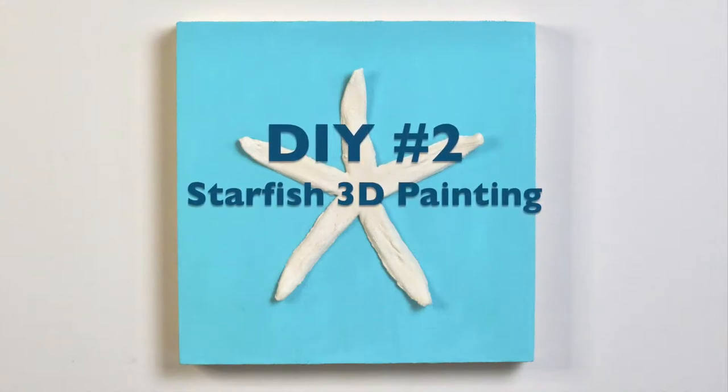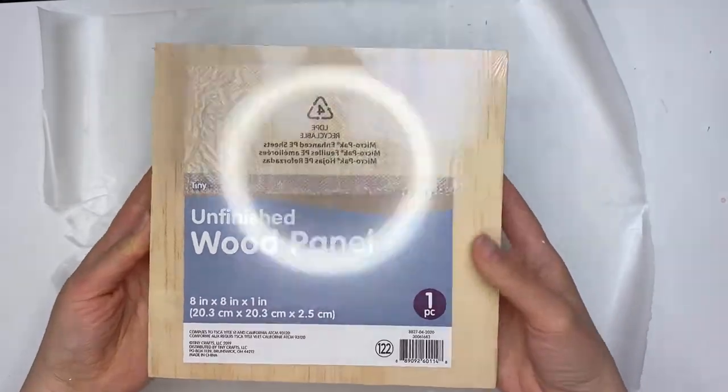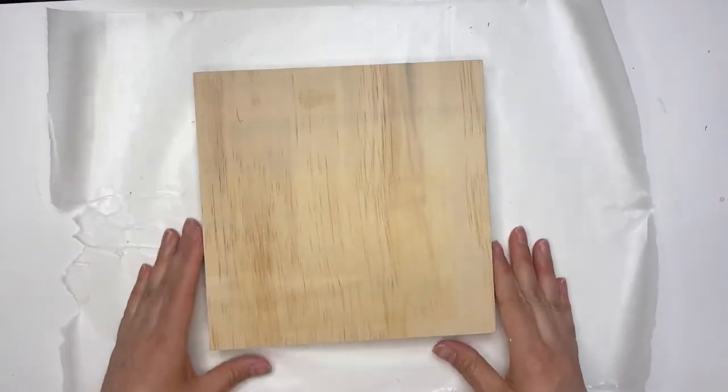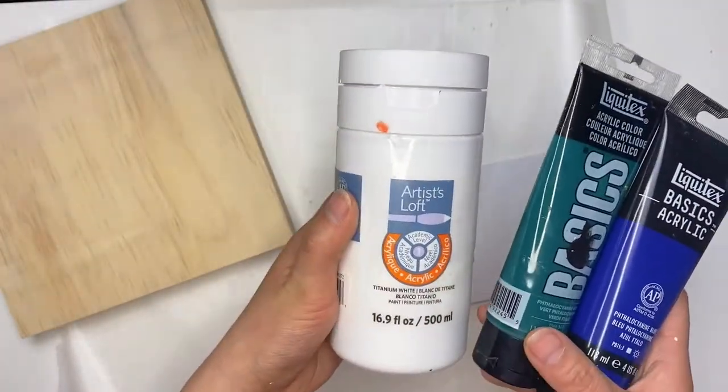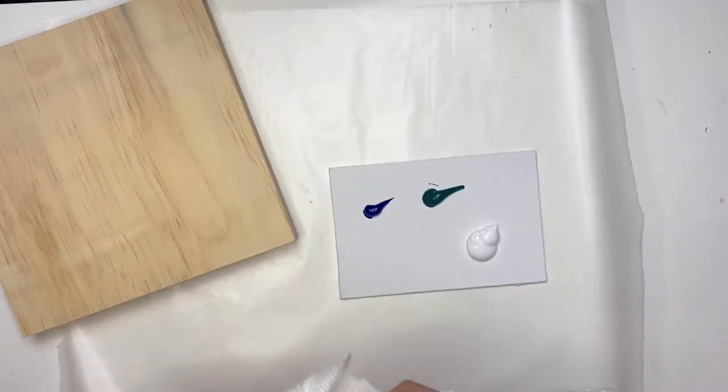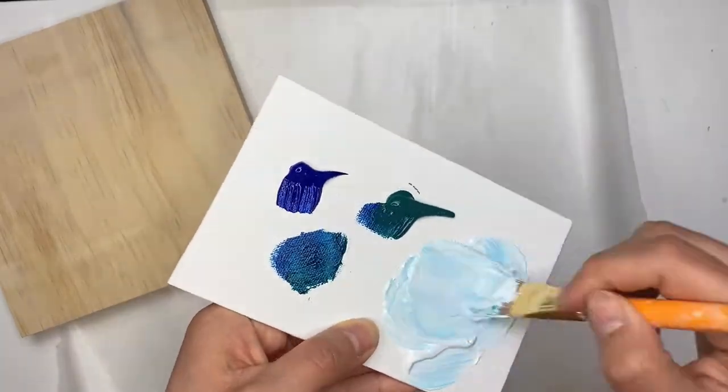Our second DIY is this cute starfish 3D painting. For this project you'll need a wood panel—mine is an eight by eight from the Dollar Tree. I started off by mixing these two acrylic paints—it's phthalo blue and phthalo green—and mixing it with a little bit of white to create like a sea bluish greenish color.